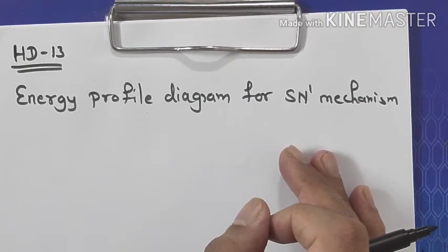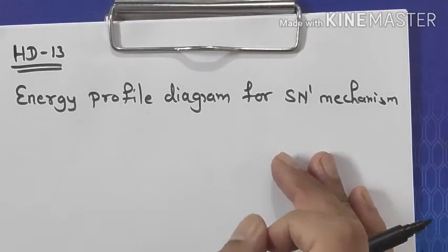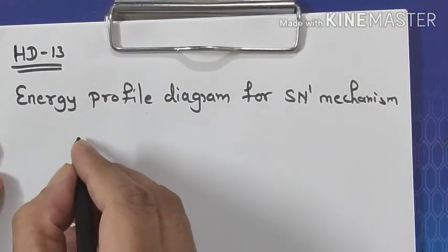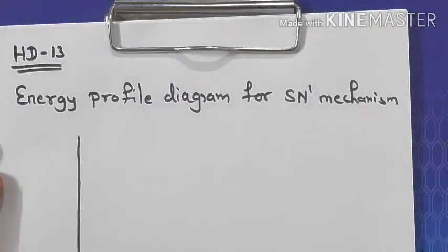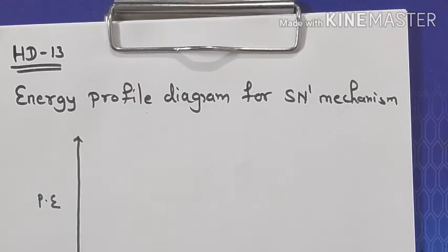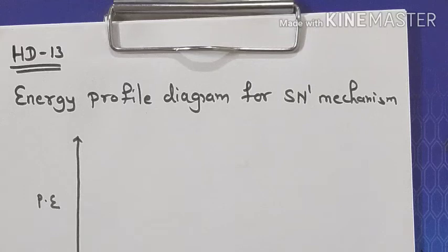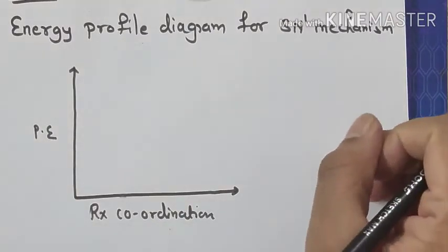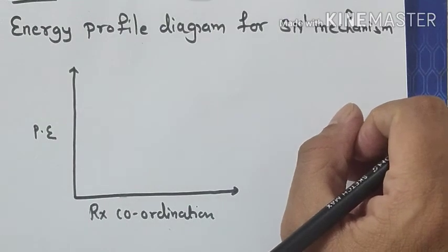If you remember, we have already done the energy profile diagram for SN2. Now let's see what the energy profile diagram for SN1 mechanism looks like. We draw a graph of potential energy on the y-axis versus reaction coordinate on the x-axis.